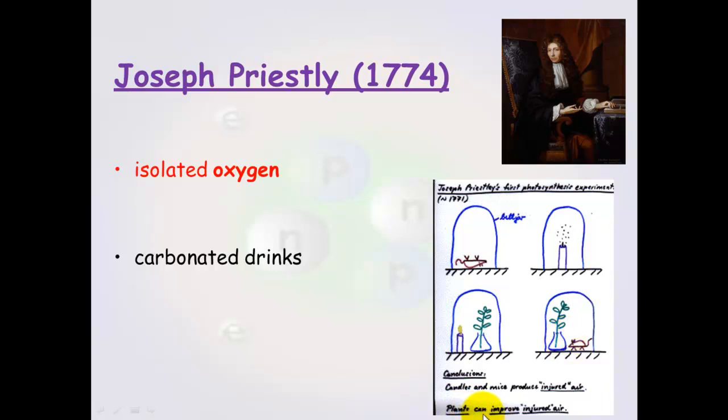However here he put a mouse into a closed system with a plant. And as you can see here he thought that plants can improve what he called injured air. He thought that the mouse was injuring the air. But further experiments led him on to realizing that that was oxygen. So these were the first photosynthetic experiments.